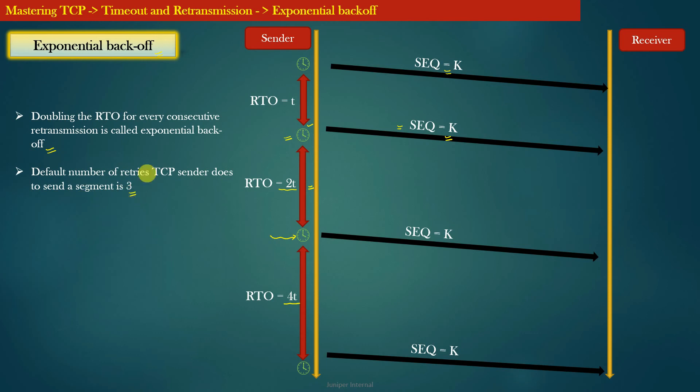The default number of retries the TCP sender does to send the segment is 3. That is, the TCP sender tries to send the data segment a maximum of 3 times.